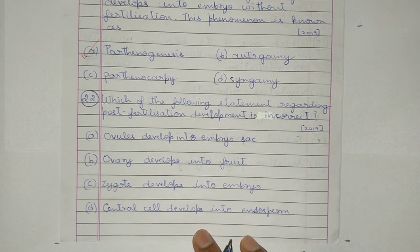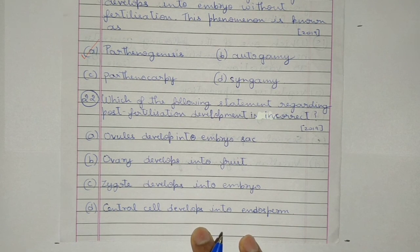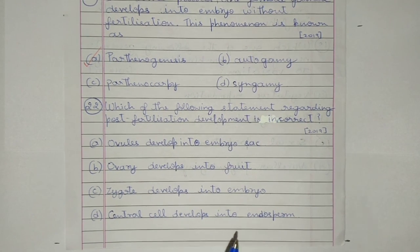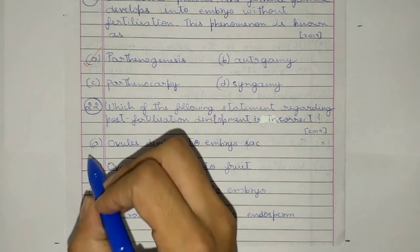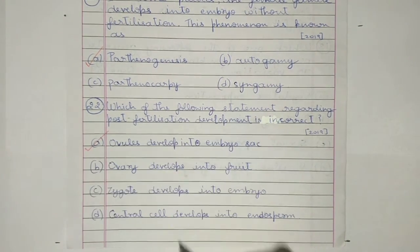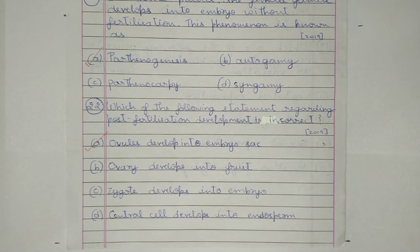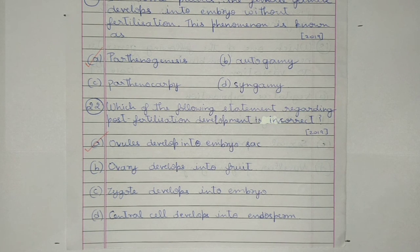Question 22. Which of the following statements regarding post-fertilization development is incorrect? a) Ovules develop into embryo sac, b) ovary develops into fruit, c) zygote develops into embryo, d) central cell develops into endosperm. The answer is a) is wrong. Thank you, like, subscribe, and share the video.